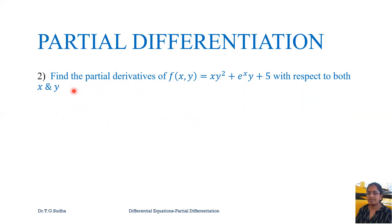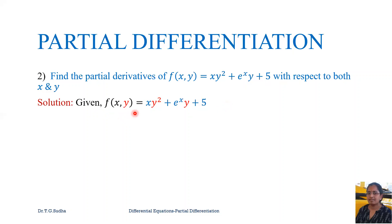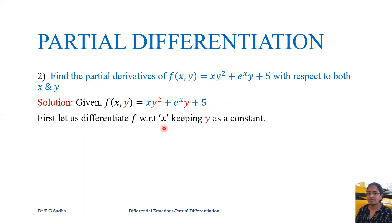Now let us see one more example. Find the partial derivatives of f = xy² + eˣy + 5 with respect to both x and y. Differentiating with respect to x, keeping y as constant: in the first term x becomes 1, giving y²; in the second term eˣ differentiates to eˣ, and y is a constant, giving eˣy; and 5 becomes 0. So ∂f/∂x = y² + eˣy.